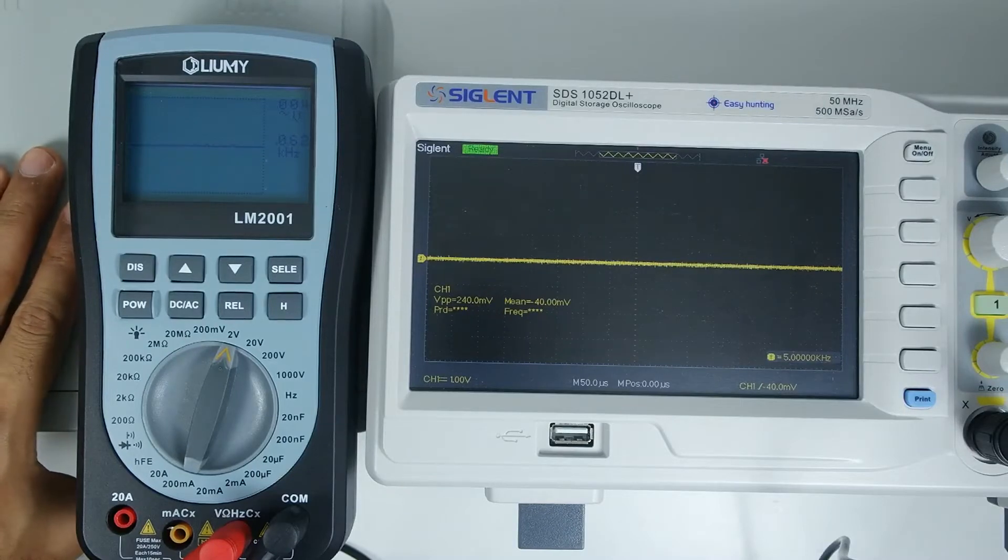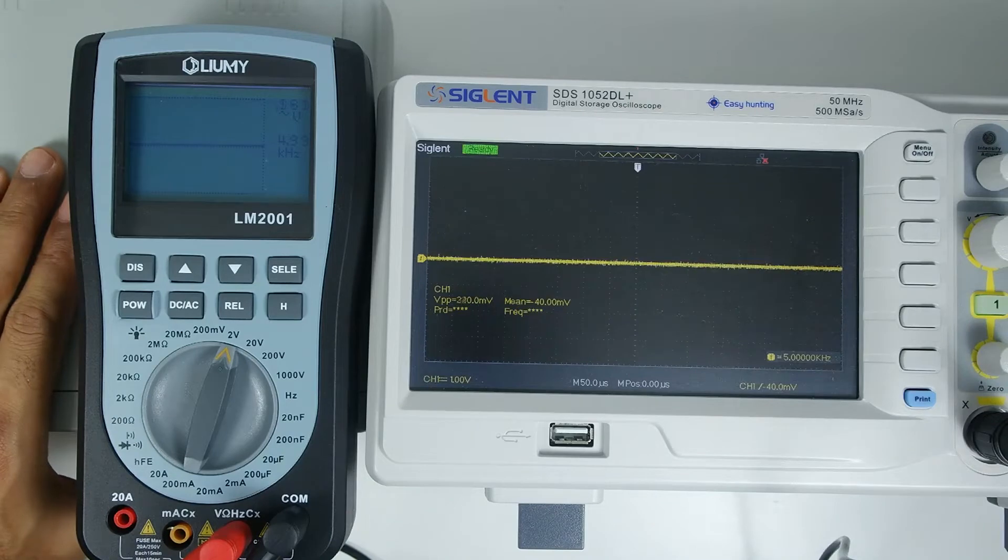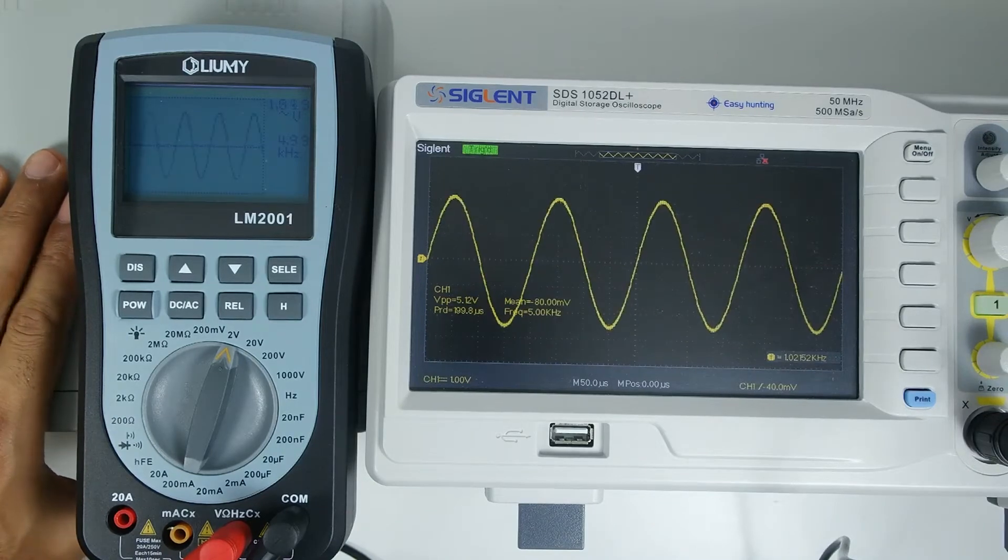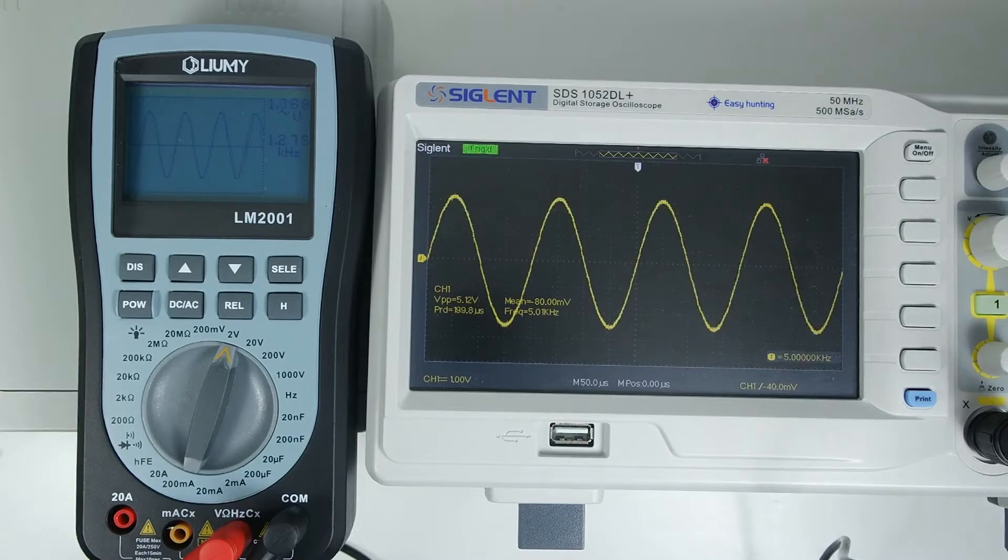Here we're going to test it with some different waveforms. These waveforms are generated by my function generator, which is below the multimeter, and I'm comparing it with my other oscilloscope.